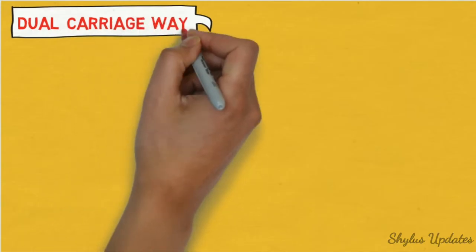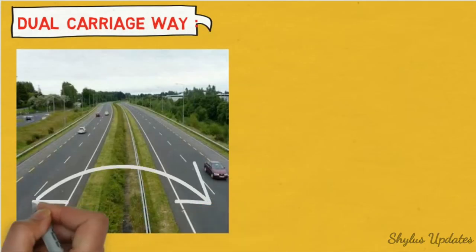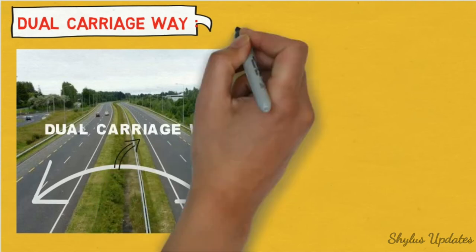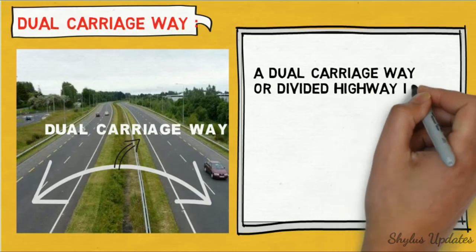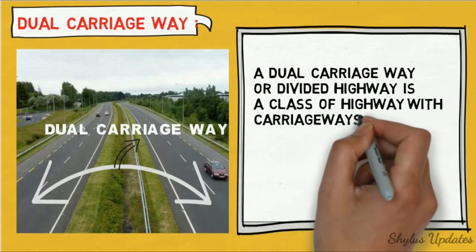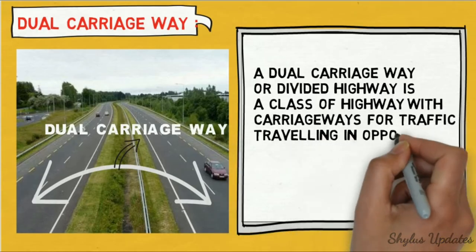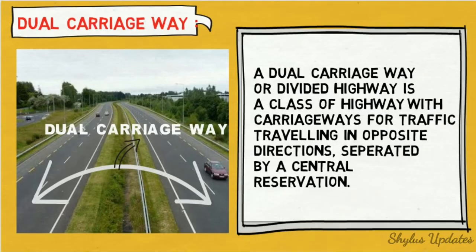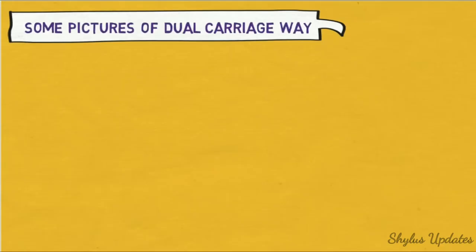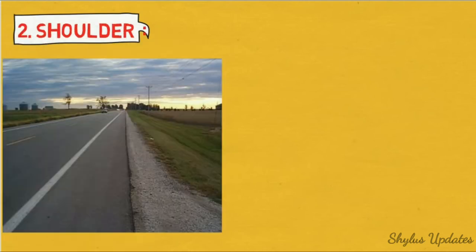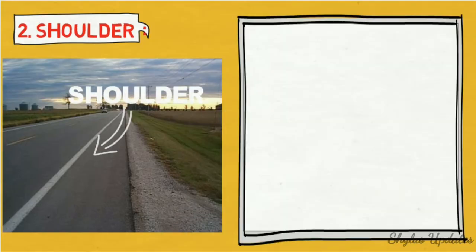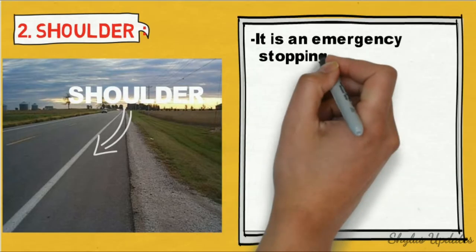Dual carriageway. A dual carriageway or divided highway is a class of highway with carriageways for traffic traveling in opposite directions, separated by a central reservation. Here are some pictures of dual carriageway.